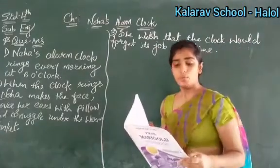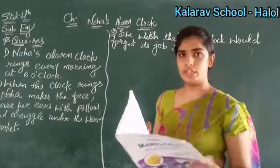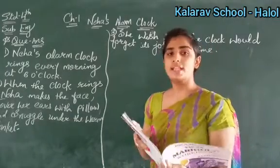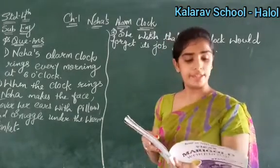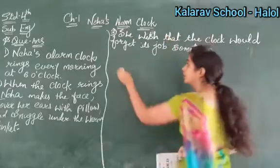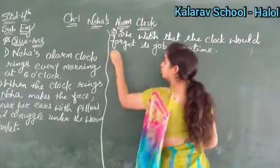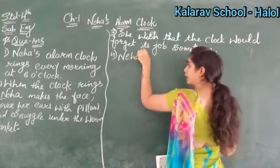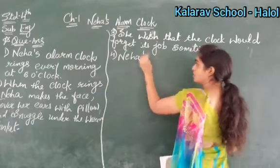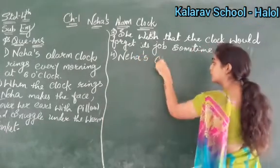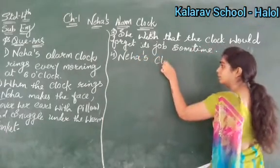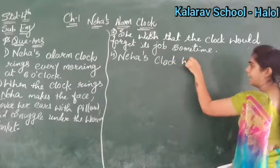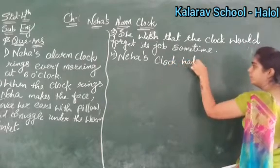Next: What happens to Neha's clock? Neha's clock had fallen. So you will write here: Neha's — first letter capital, apostrophe — Neha's clock had fallen.